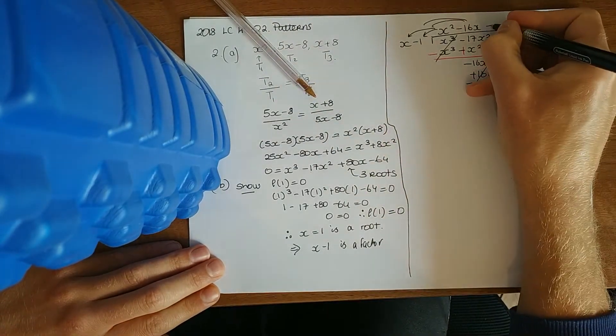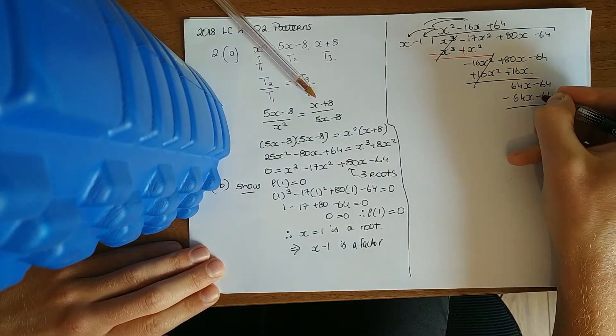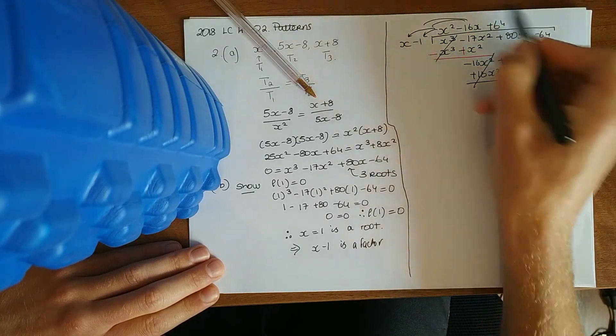What do you multiply x by to get 64x? 64. And that looks good to me. There's no remainder. Draw your line, change the signs. Then this is a quadratic.